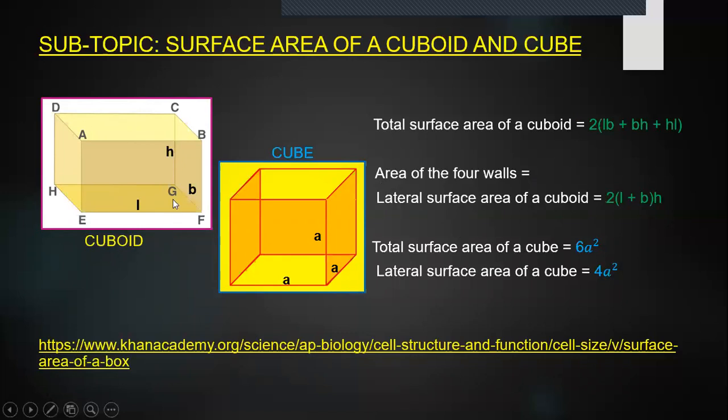In a cuboid, all the faces are rectangular. As you can observe over here, there are six rectangular faces and all the opposite faces are parallel to each other. For example, the top and the bottom face, the front and the one that is behind and the two side faces.